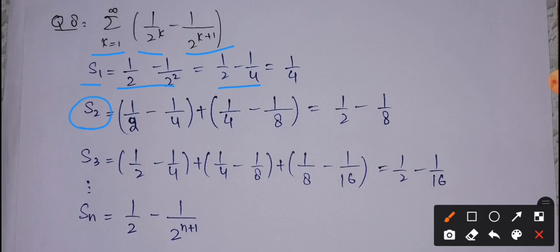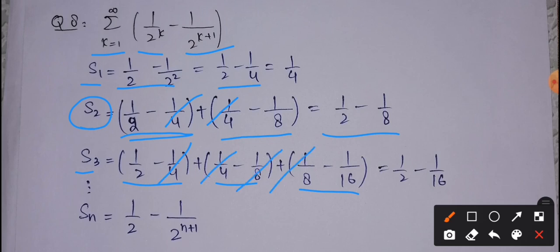S_2 is the sum of the first two terms. Putting k equal to 1 gives 1/2 minus 1/4, and putting k equal to 2 gives 1/4 minus 1/8. The 1/4 terms cancel, leaving 1/2 minus 1/8. For S_3, the sum of the first three terms with k equal to 1, 2, and 3, the 1/4 and 1/8 terms cancel, leaving 1/2 minus 1/16.